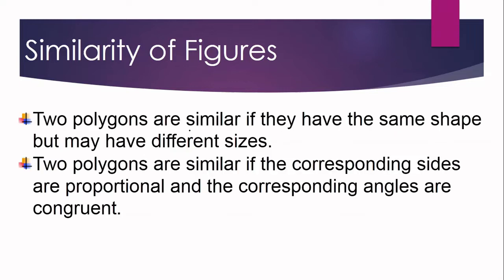Now, how about similar figures? Two polygons or figures are similar if they have the same shape but may have different sizes. Two polygons are similar if the corresponding angles are congruent and the corresponding sides are proportional — meaning all the corresponding sides have equal ratio. When figures are congruent, both shape and size are the same; when similar, they have the same shape but may differ in size, and the corresponding sides are proportional rather than congruent.